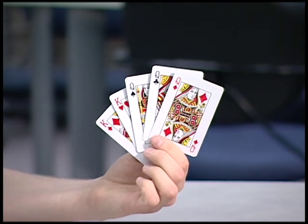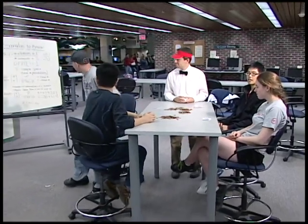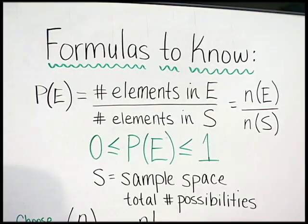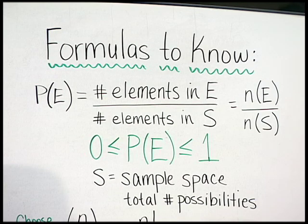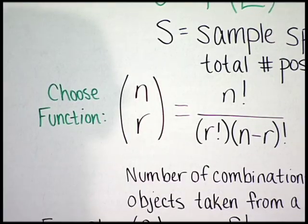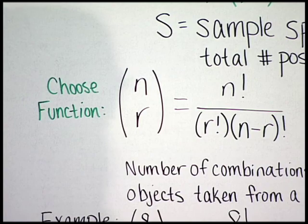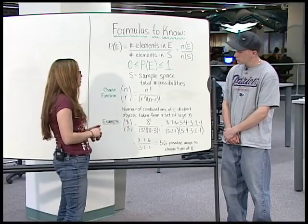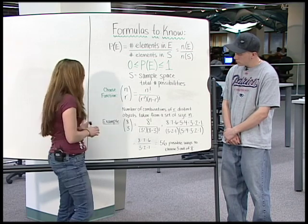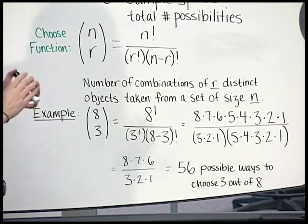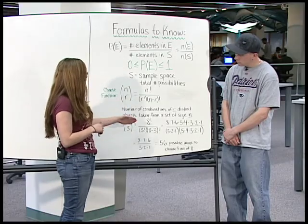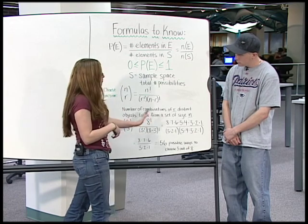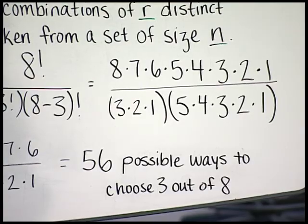What's the probability of getting this hand? I can help you with that. Why don't you come on over here? Before we compute the probability of that, there are some formulas you need to know. First, the probability of E is the number of elements in E over the number of elements in S. The probability of E is between zero and one, and S equals the sample space — the total number of possibilities. Another formula you need to know is the choose function, denoted n choose r, equaling n factorial over r factorial times (n minus r) factorial — the number of combinations of r distinct objects taken from a set of size n. Quick example: 8 choose 3, which equals 8 factorial over 3 factorial times 5 factorial. You get 56 possible ways to choose 3 out of 8.